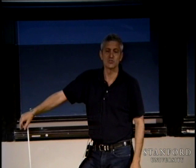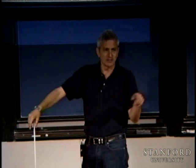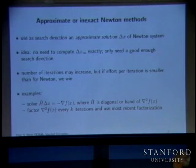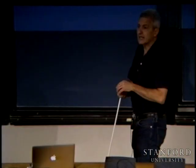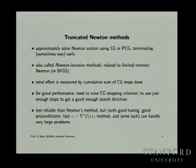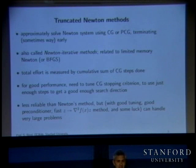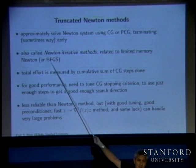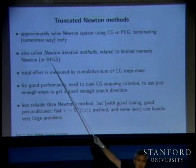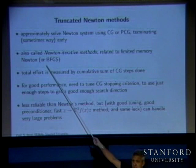Truncated Newton methods are less reliable than full Newton, but with good tuning, a good preconditioner, and a fast Hessian multiply, you can handle very large problems. Some approximate Newton approaches: replace the Hessian with its diagonal or a band approximation; use the Shermansky method which factors the Hessian every k iterations and reuses that factor. In dense factor-solve methods, factorization costs O(n^3) but solve is O(n^2), so multiple right-hand sides after one factorization are cheap — this does not transfer to iterative methods.